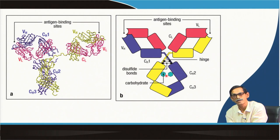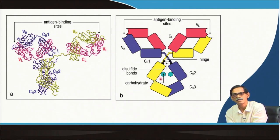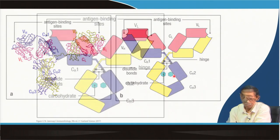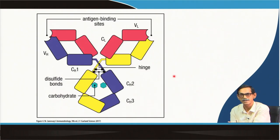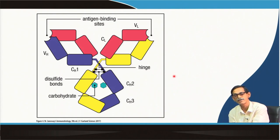The sugar is very important. Glycosylation can occur in the constant region and sometimes in the variable region as well. This is the cartoon of antibody structure based on the crystal structure.